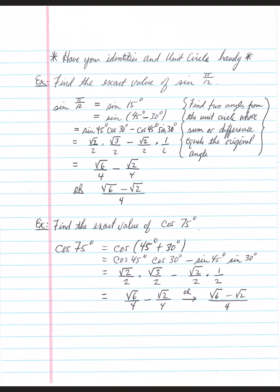Another example: find the exact value of cosine(75°). 75° is not distinctly marked on the unit circle, but 45° + 30° = 75°. In the sum and difference section, find the cosine sum identity. The expansion is cosine(45)·cosine(30) minus sine(45)·sine(30) — you go opposite with cosine. If you can get it expanded correctly, you've got it beat.